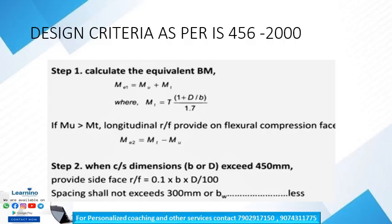Next, Me2 = mt − mu. Me2 will be considered as acting in the opposite sense to the moment mu. Step 2 covers the cross-sectional dimensions: if the overall depth or breadth exceeds 450 mm, provide side face reinforcement equal to 0.1 × b × d / 100, at a spacing of 300 mm.